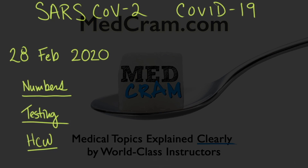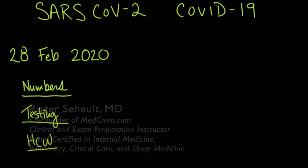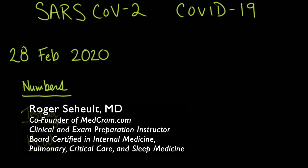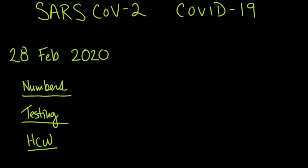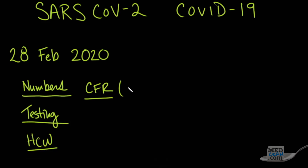Welcome to another MedCram COVID-19 update. We're going to talk today again about the numbers and the epidemiology. We're actually going to talk about the case fatality rate and age specifically. A lot of you have asked about how age affects that. We're also going to talk about testing and how we test for SARS-CoV-2.